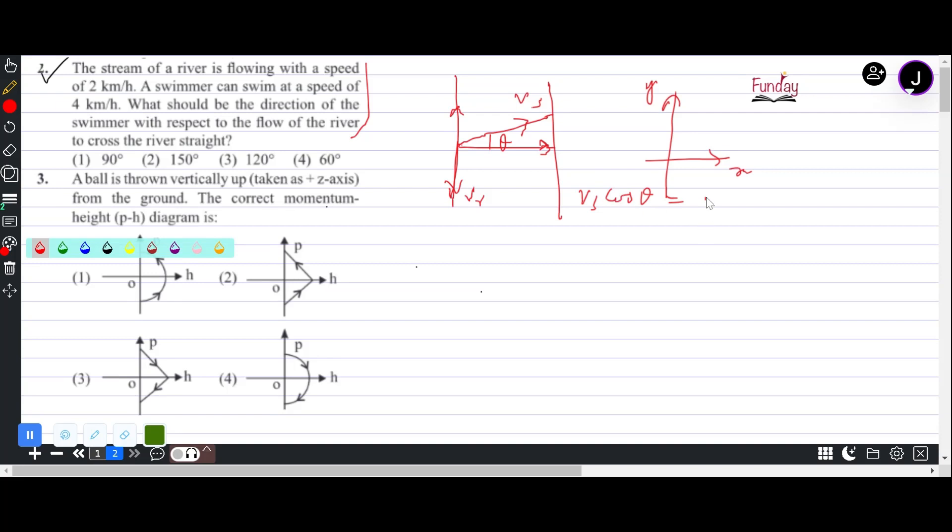So the vertical component of swimmer's speed VY should be equal to speed of the river. In that case, it will cancel out and swimmer will reach at the same point where he started, straight across the river.